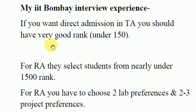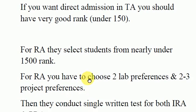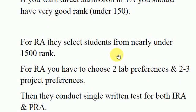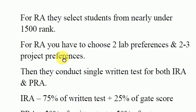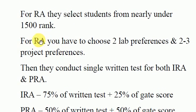For direct admission in TA you should have a very good rank under 150. For RA, I observed that IIT Bombay and IISc select students from nearly under 1500 rank — all students under 1500 rank get called for RA.